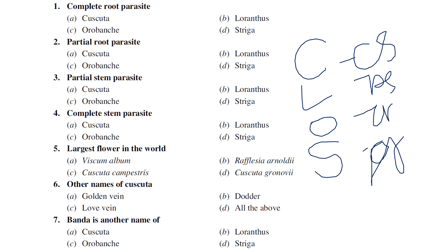To recap: among Cuscuta, Loranthus, Orobanche, and Striga — Orobanche (Warabanki) is the best example of a complete root parasite, and Striga is the example for a partial root parasite.